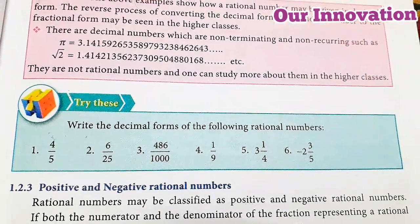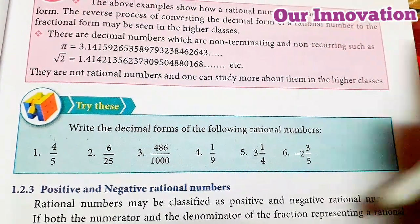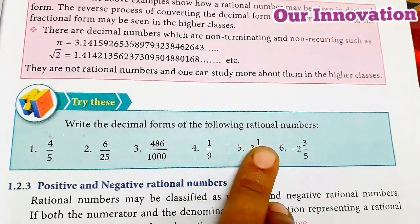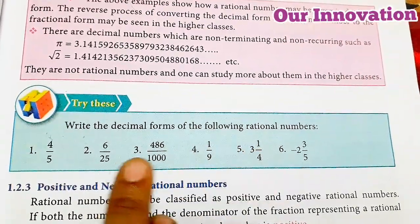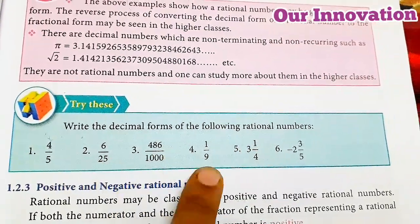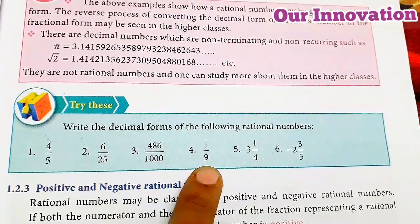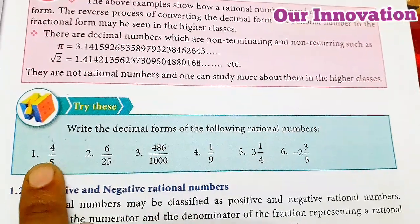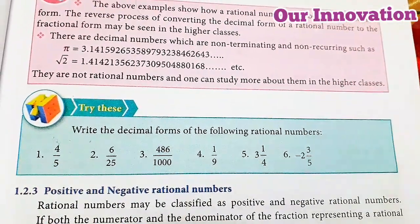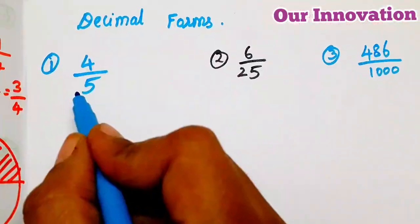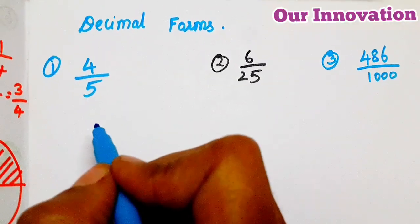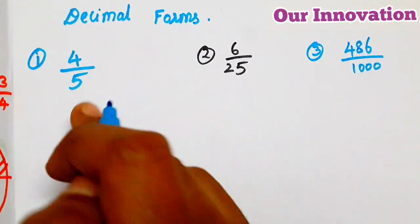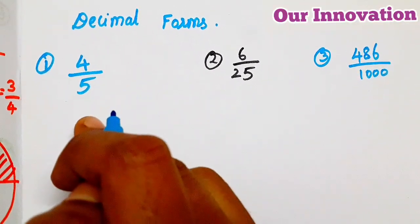Students, if you try this, write the decimal forms of the following rational numbers. You have to write decimal forms. The first sum is 4 by 5. You have to write the denominator — 10, 10,000. If you look at decimal forms, you have to write decimal forms.